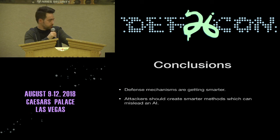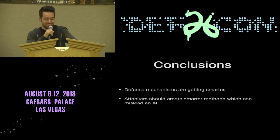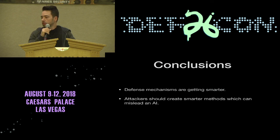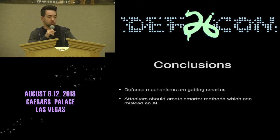As a result, we can say that defense mechanisms are evolving to something smarter and better. In the future, signature-based approaches will likely be totally abandoned, and there is a high probability that machine learning-based defense mechanisms will become cheaper and more widespread. So attackers should also evolve — we need to find smarter ways to mislead artificial intelligence. Thank you for listening, that's all I got.